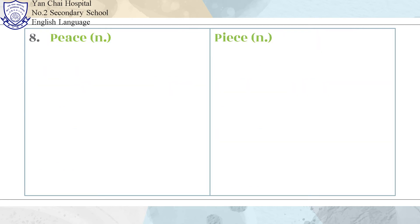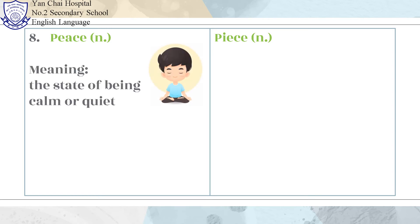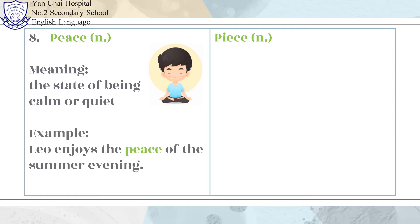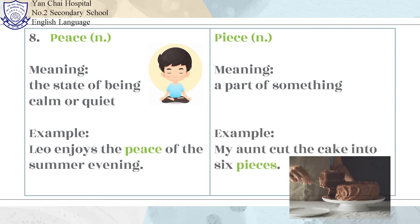Number 8: Peace and Piece. Peace means the state of being calm or quiet. Example: Leo enjoys the peace of the summer evening. Piece means a part of something. Example: My aunt cut the cake into six pieces.